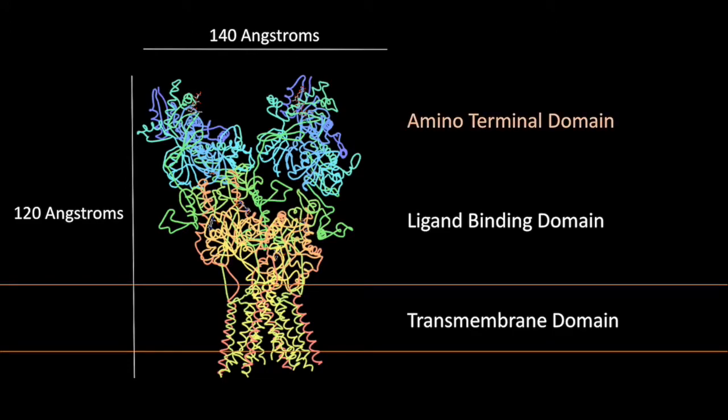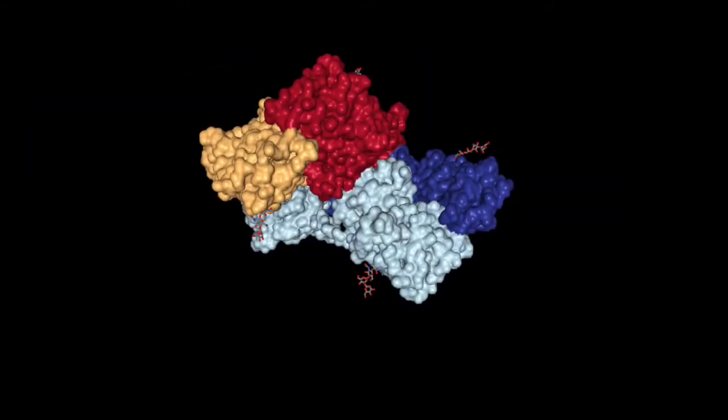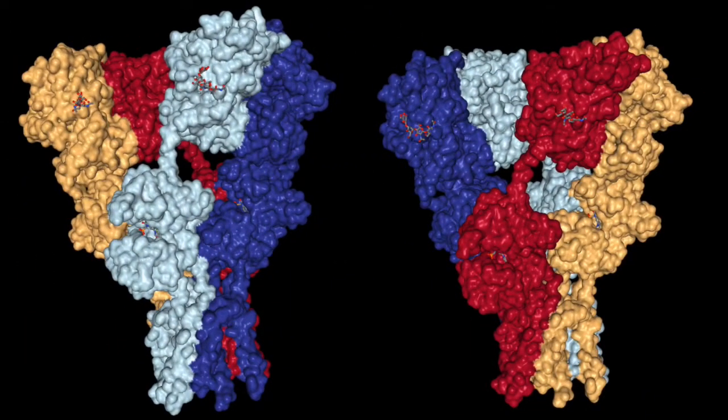I will first focus on aminoterminal domain. If you look from the top, you can kind of see that it is a dimer with dimers. This is another visual representation of how the protein looks like from the top. From the side, you can clearly see that it is made out of four chains.